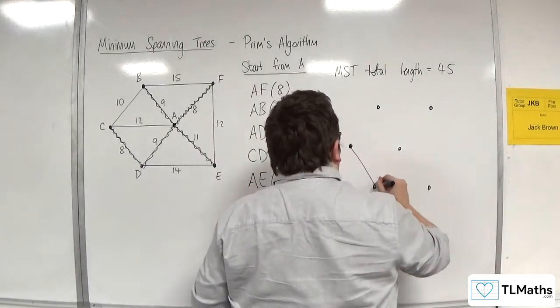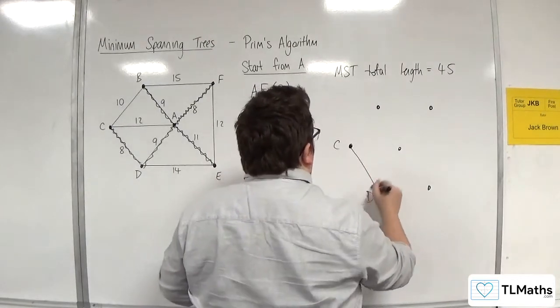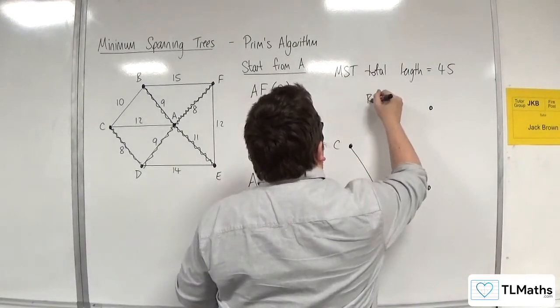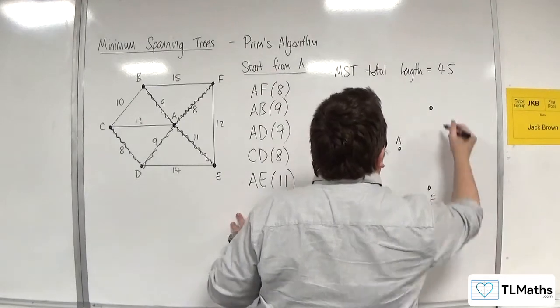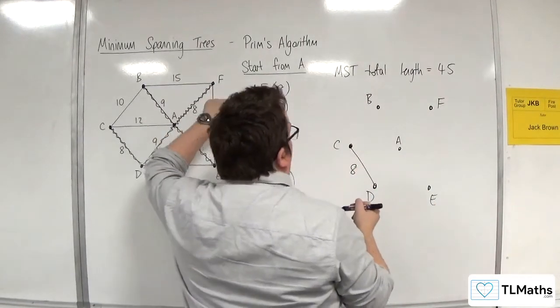So we've got the C, D there, haven't we? So C, D. That was A, B, C, D, E, and F. So we've got the C, D with 8. A, F was 8.